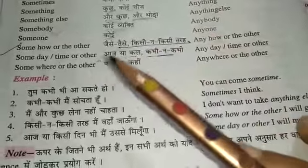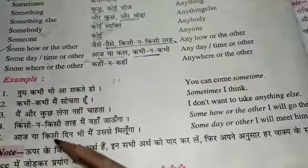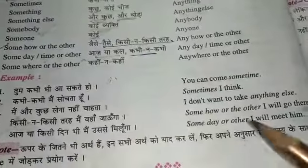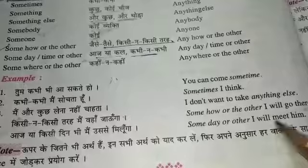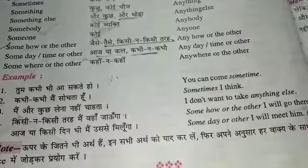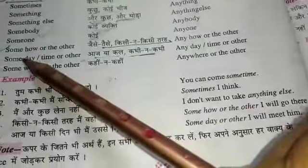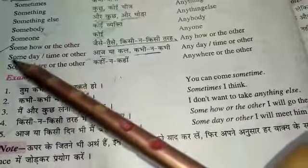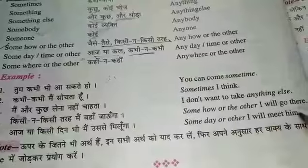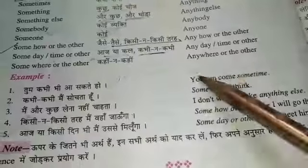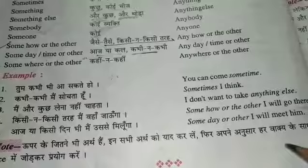Someday or other — aaj ya kisi bhi din mein usse milunga. Someday or other I will meet him. And for sometime or other — kabhi na kabhi mein usse milunga. Sometime or other I will meet him.